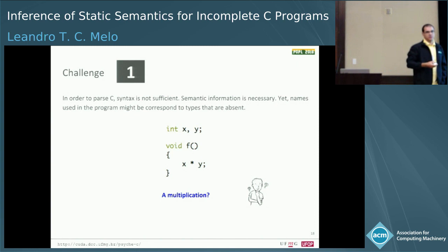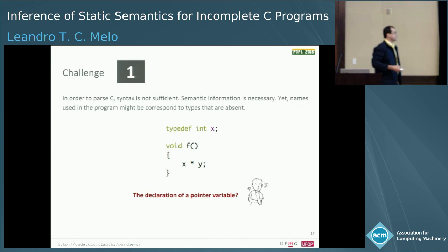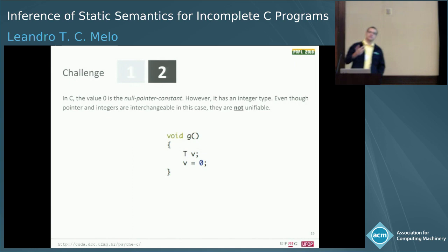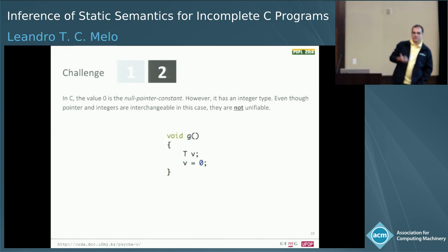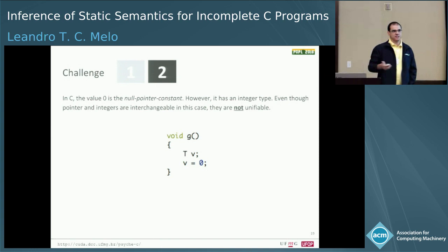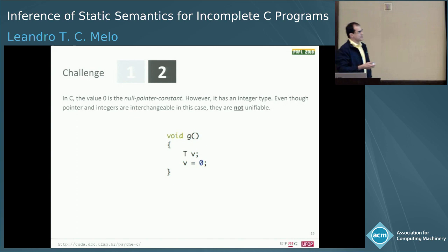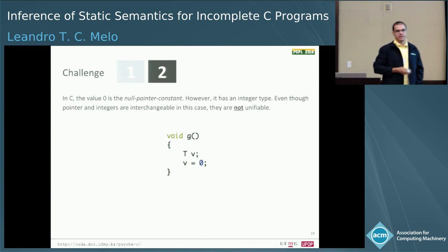Let's take another challenge — this is a semantic one — because zero is an integer value, however zero is also the null pointer constant in C. However, pointers and integers are not interchangeable; we cannot unify them because they don't work under the same rules of the language. So is this the declaration of a pointer type being initialized with a pointer, or is it just a plain integer value being initialized with zero? We also don't know that information.